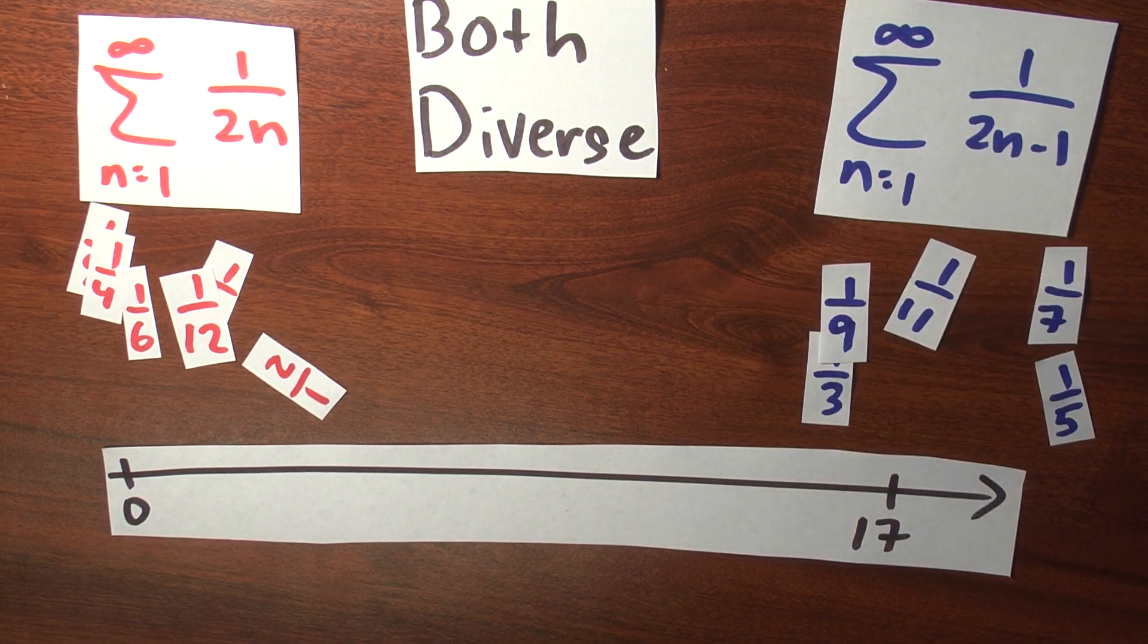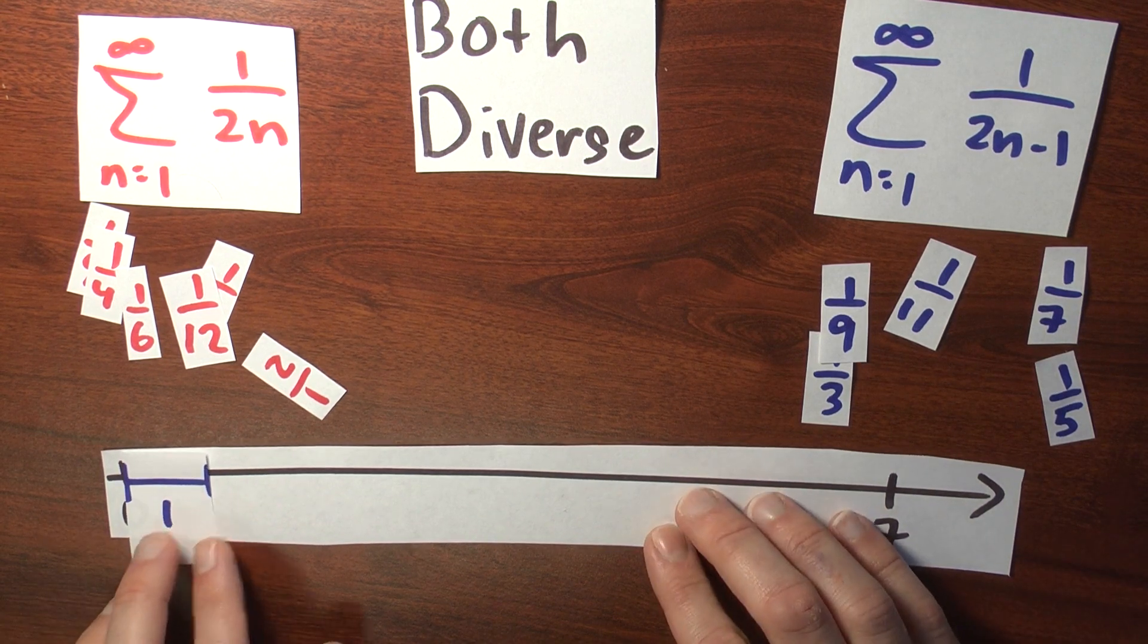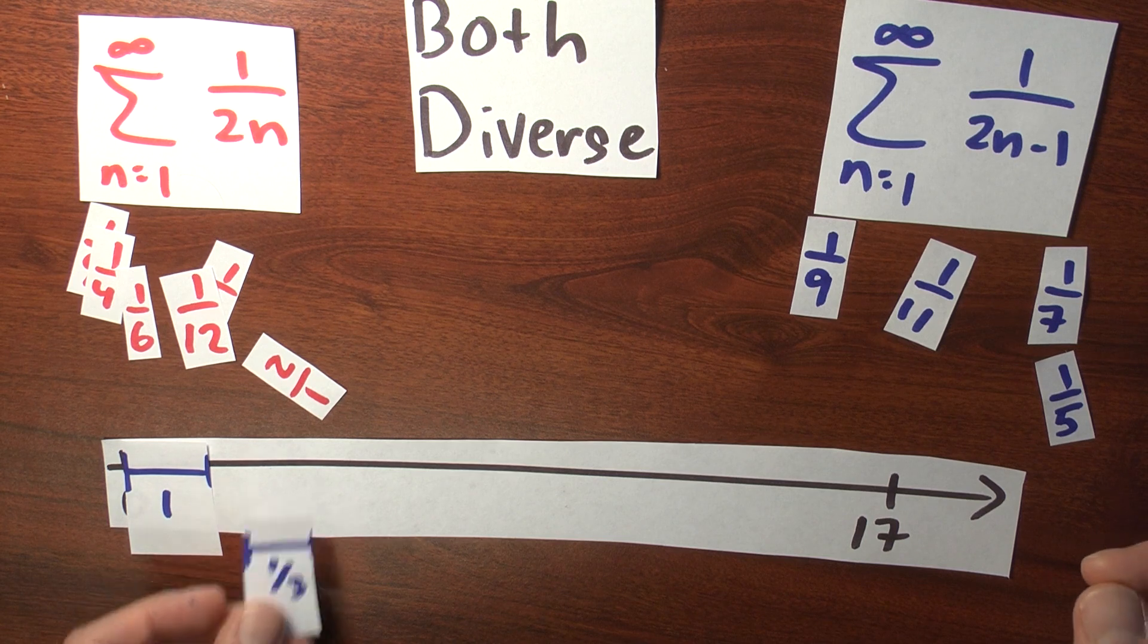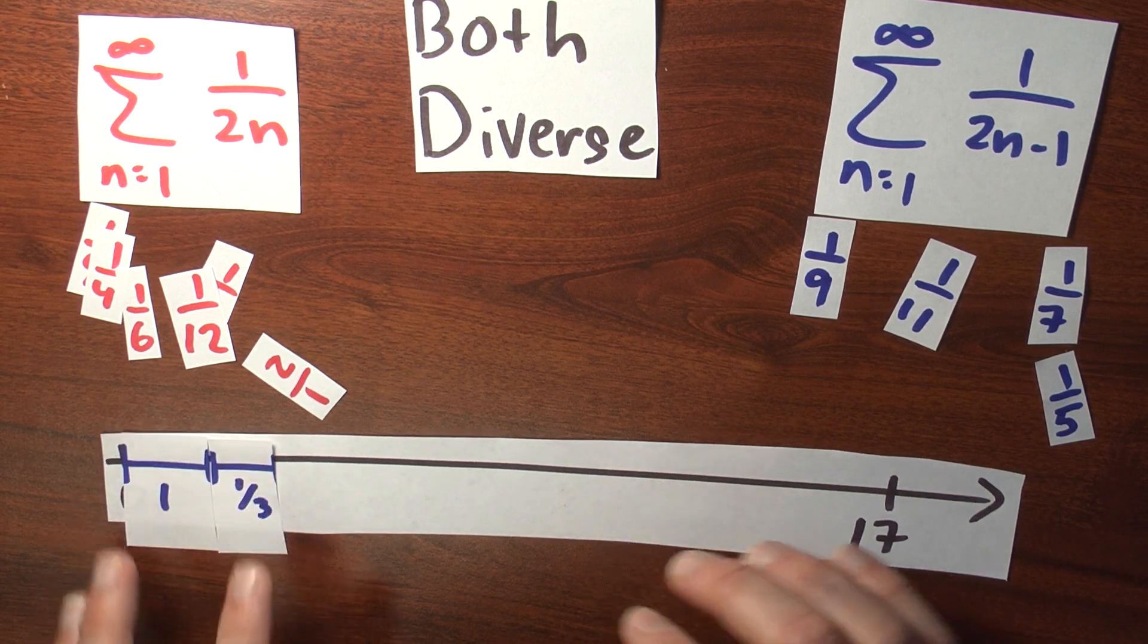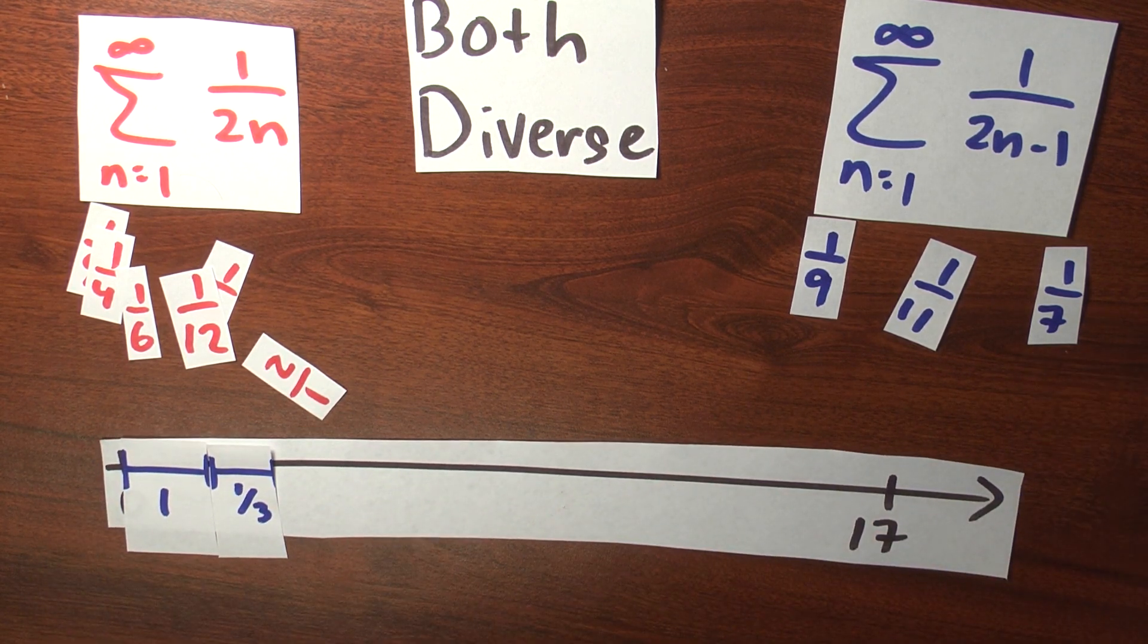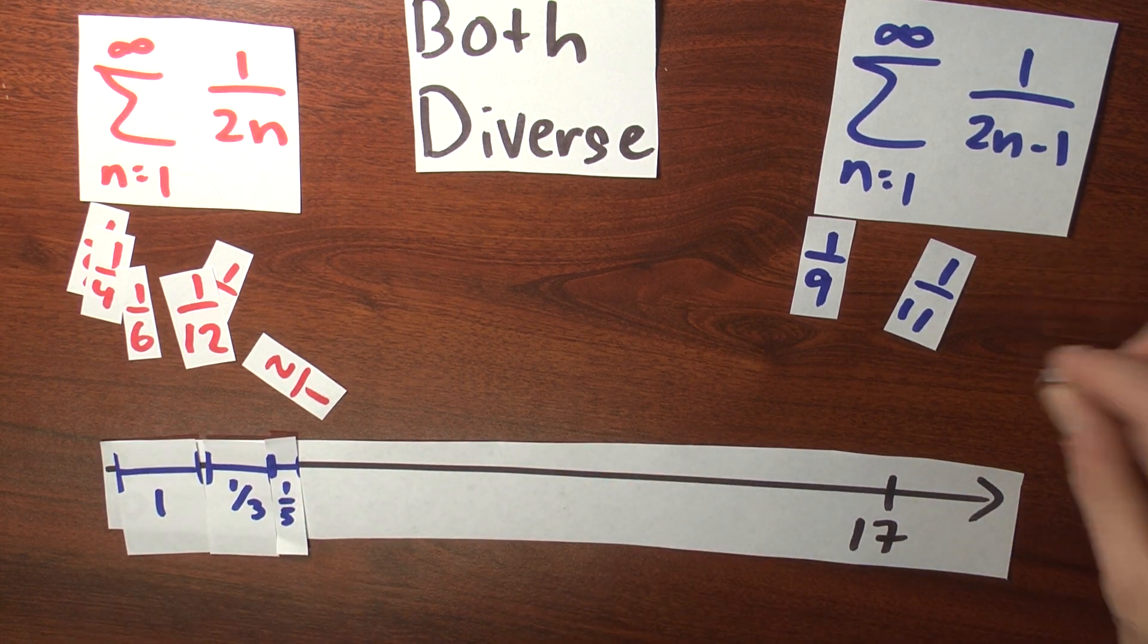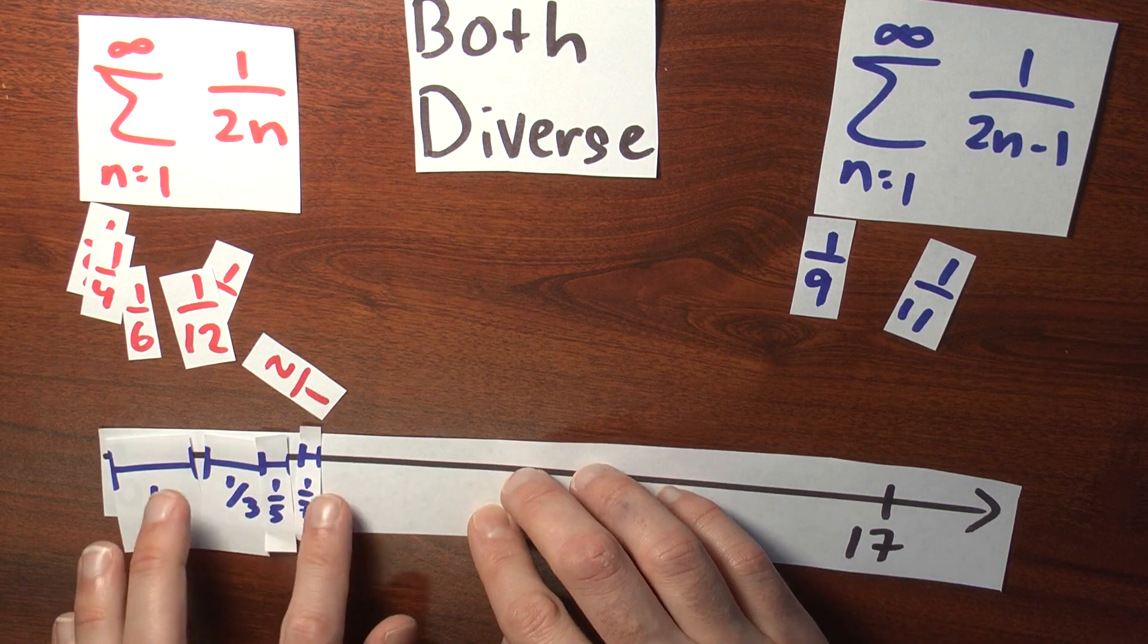So I can just get started, right? I pick up 1, and that gets me a little bit closer to 17. I'll pick up the next number, here's a third. That gets me a bit closer to 17. I'll pick up a fifth. That gets me a little bit closer to 17. I'll pick up a seventh. I think that gets me even a little bit closer to 17.